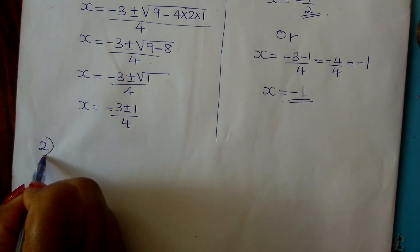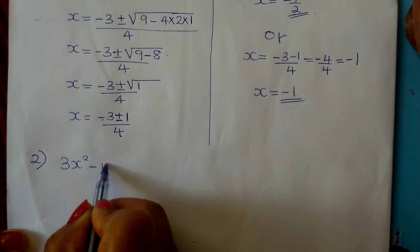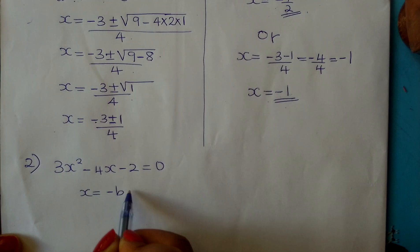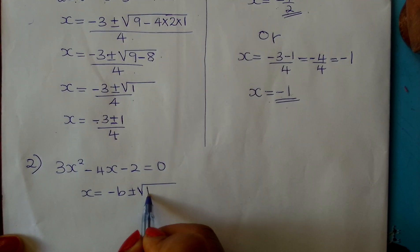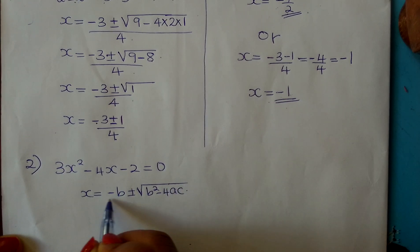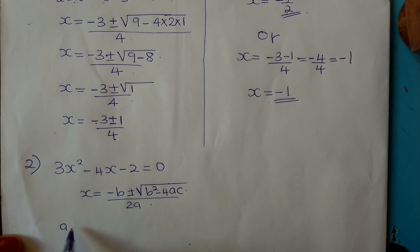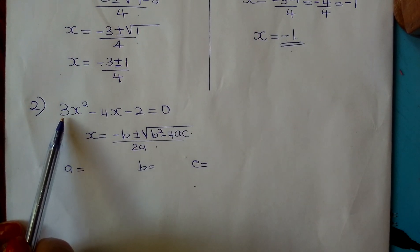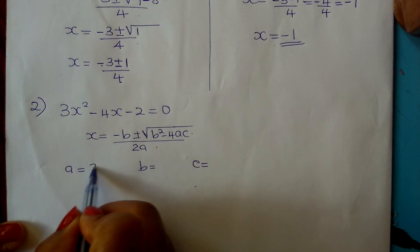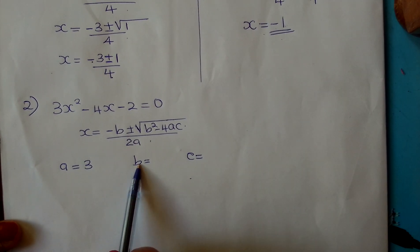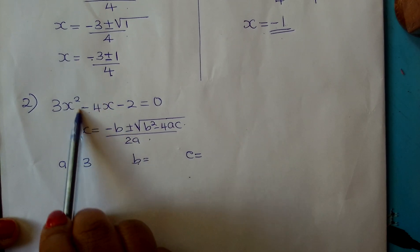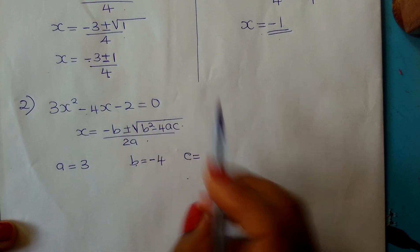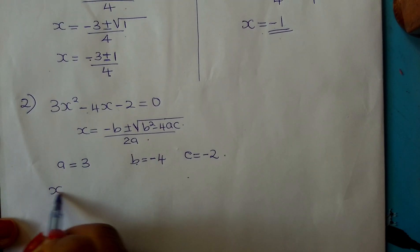We go to the second equation. Suppose you are told 3x squared minus 4x minus 2 equals 0. You write your quadratic formula: b squared minus 4ac, all divided by 2a. Your a is the coefficient of x squared, which is 3. Your b is minus 4 — not 4, but minus 4 — the coefficient of x. Your c is the constant, which is minus 2. After identifying those correctly, you substitute.